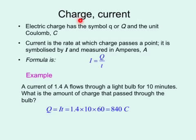Charge and current. Electric charge has a symbol small Q or capital Q, and the unit is Coulomb. Current is the rate at which charge passes a point. It is symbolised by capital I and measured in amps. And the formula connecting charge and current is I, which is current, equal to Q, which is charge divided by time. And here is a simple example showing you how the formula works.